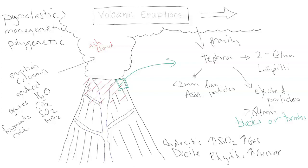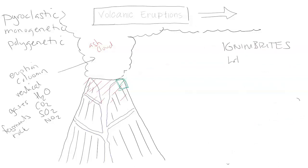Vesuvius had some of these, as did Tambora, and likely the Yellowstone eruptions as well. The next feature is ignimbrites — Latin for 'fire cloud and rock.' These are a selection of different types of fiery ash clouds ejected from the volcano and controlled by gravity. The size, volume, and mass also dictate the speed and how far they flow.